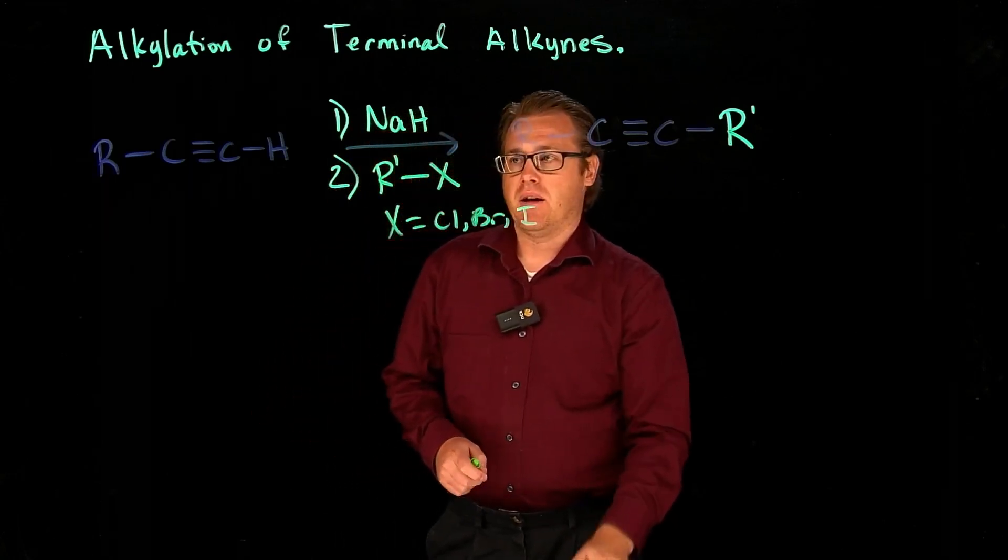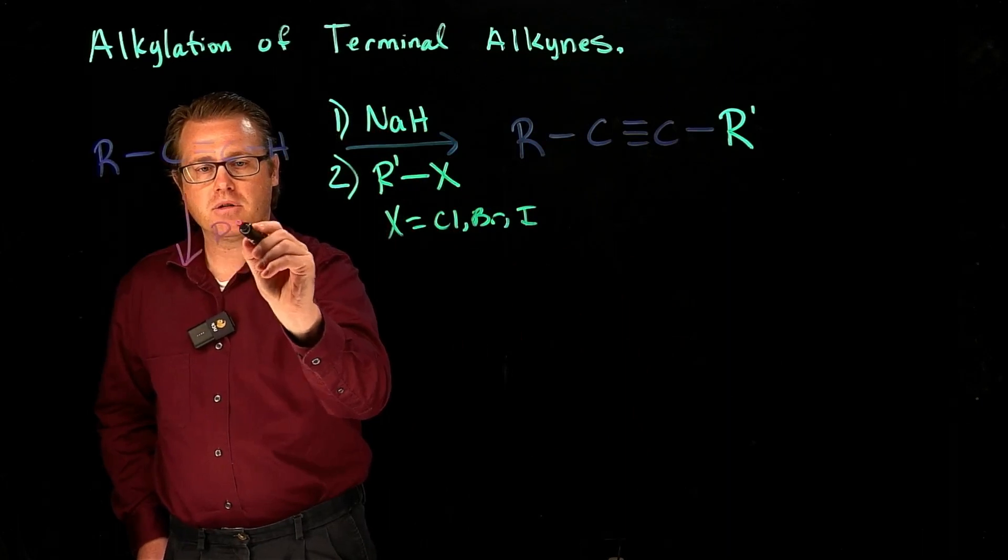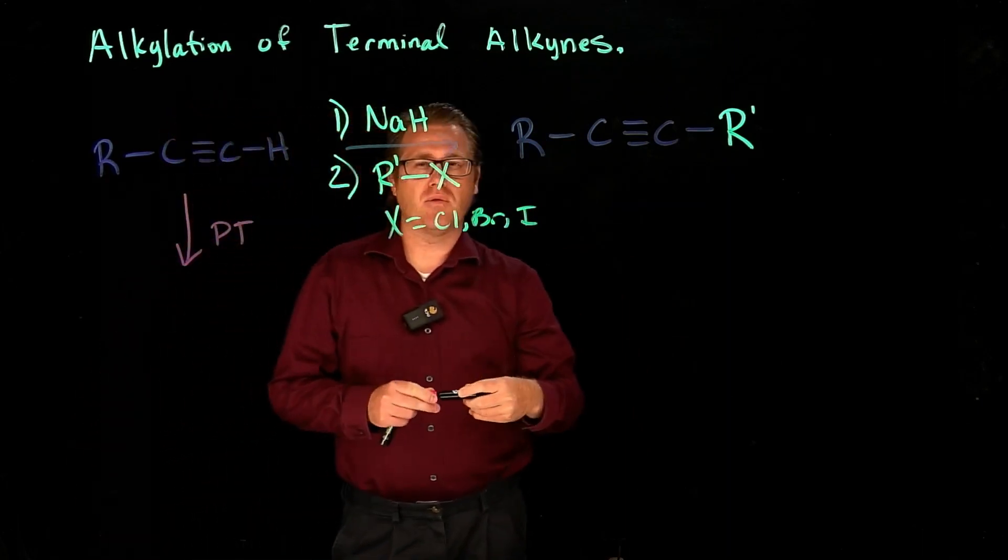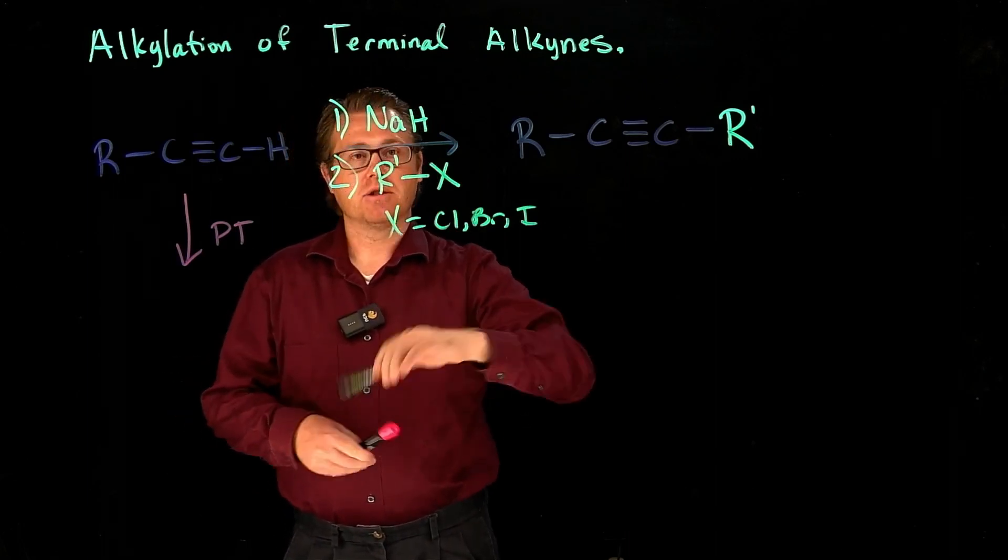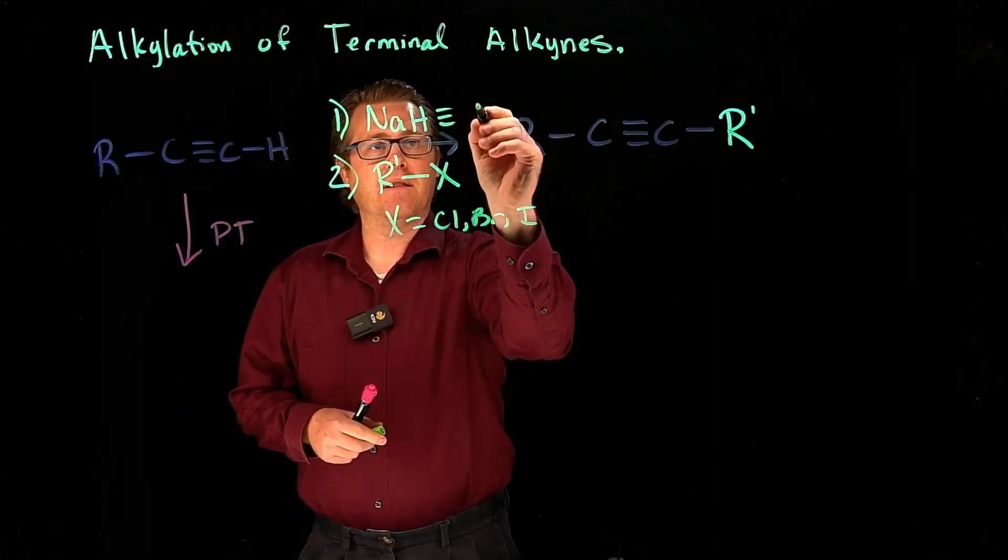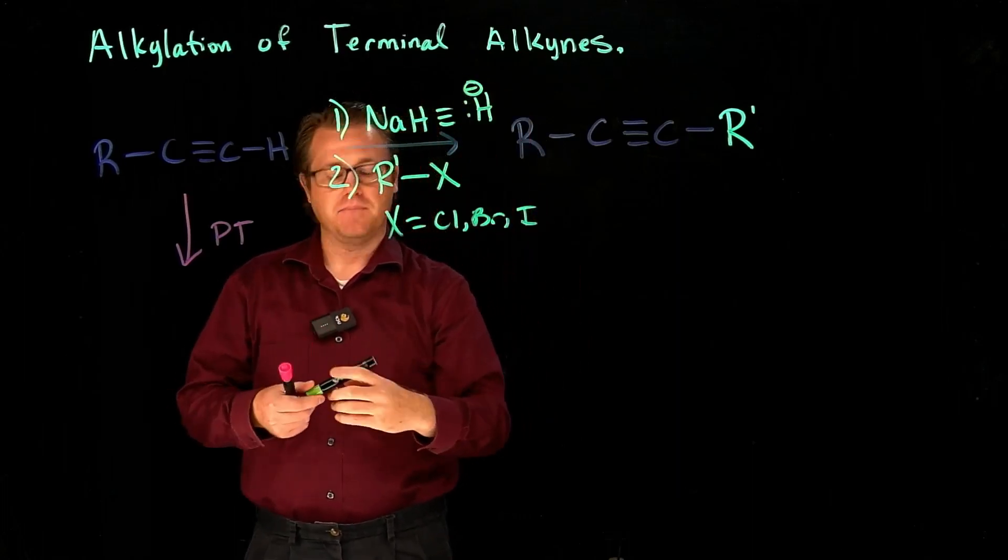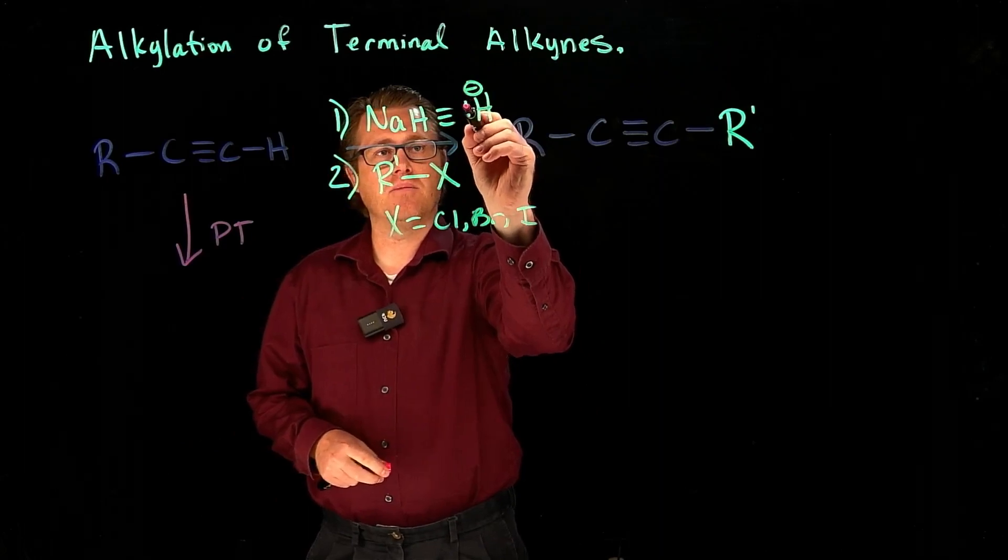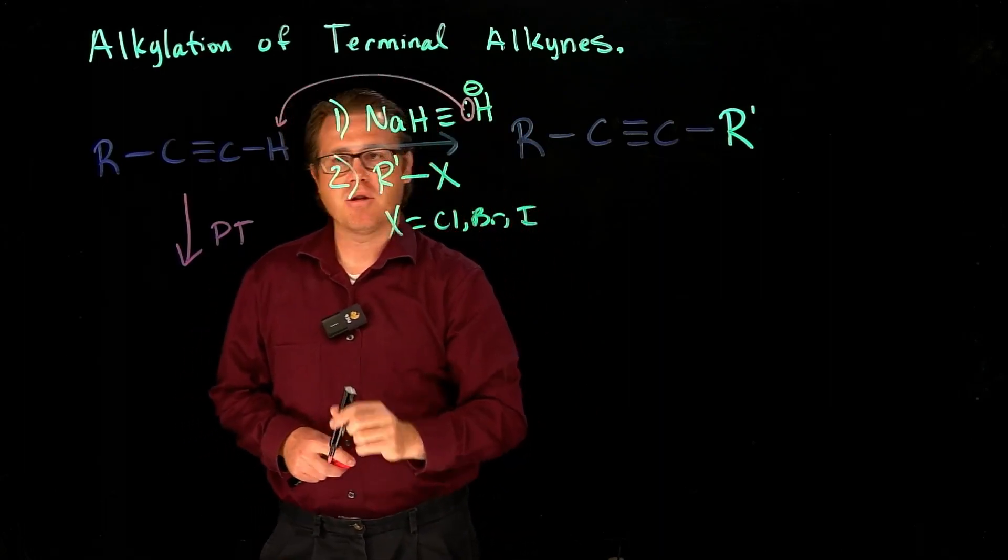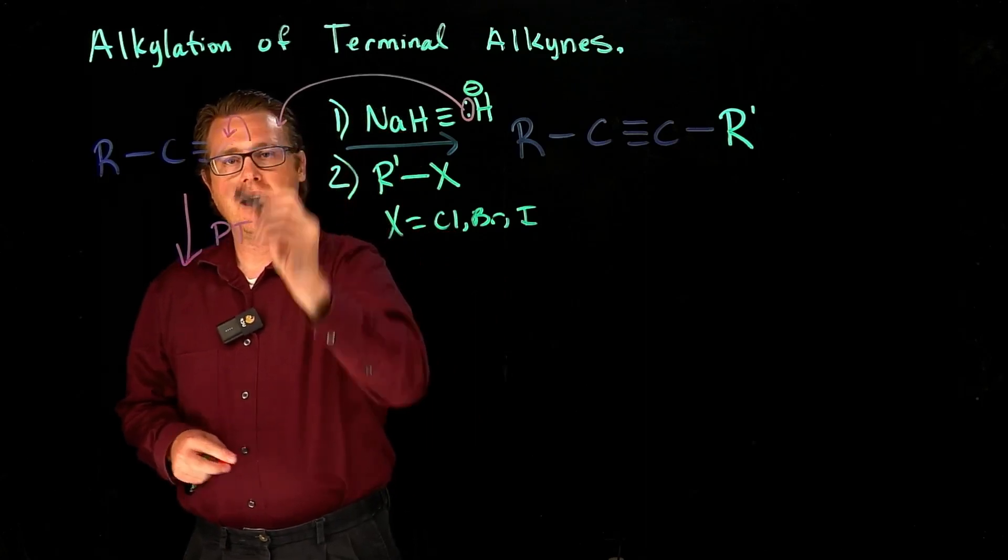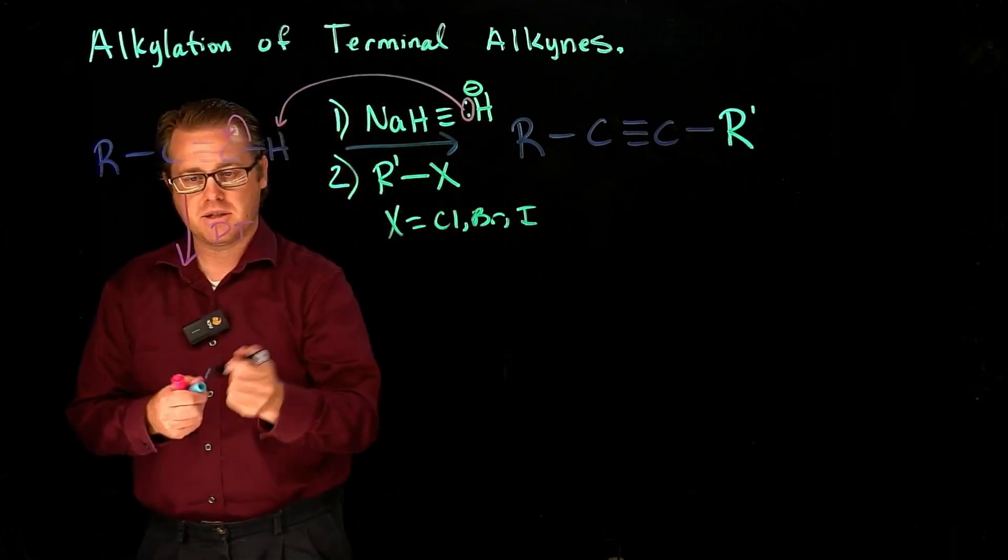So in our first step here, what happens, my proton transfer here, we can represent this sodium hydride as a hydride. So we could look at it in this way, like that, an H minus, and that H minus is going to use the lone pair there and come in and abstract that proton and put the electrons onto the carbon like so.